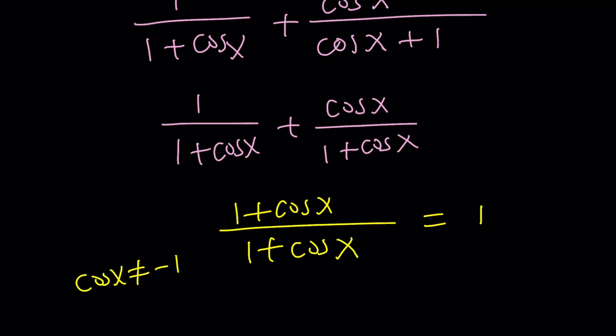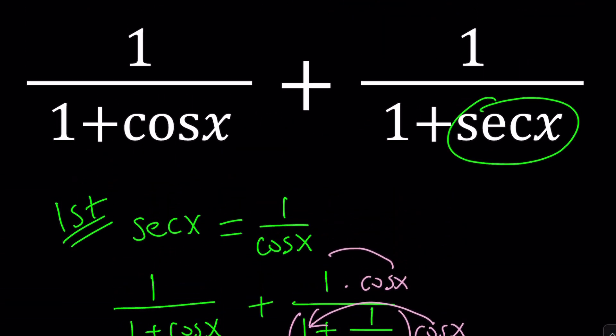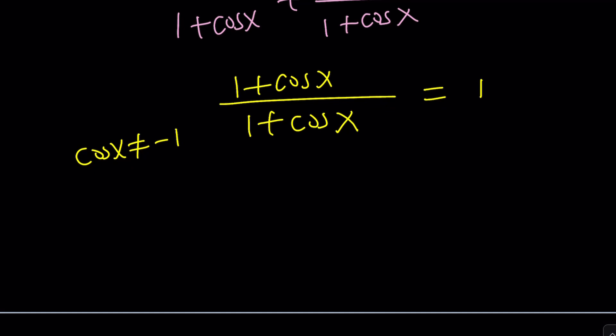As long as cosine x does not equal negative 1. Under those conditions, of course, we also need that requirement for cosine x not being equal to negative 1 at the beginning, because that was the denominator. And of course, if cosine x is negative 1, secant will also be negative 1. So under those conditions, we found that our expression simplifies to 1. A lot of times, trigonometric expressions will simplify to 1. If you have to guess, then it would be wise to go with 1. But don't quote me on that.